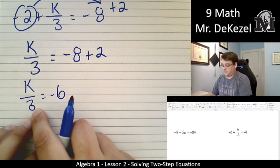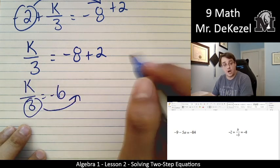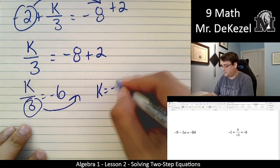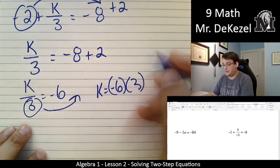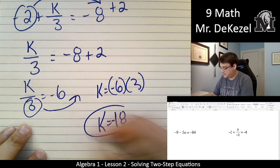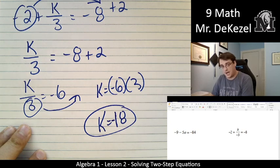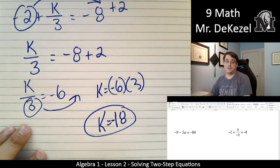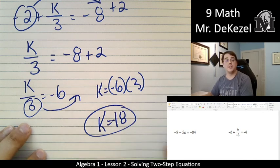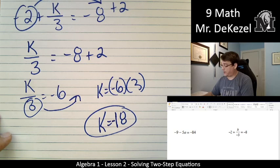So k divided by 3 is equal to minus 6. We have a 3 on the bottom, so if we're going to move it to the other side, it's going to go on to the top. k is equal to minus 6 times 3. k is equal to minus 18. One step at a time. We move the 2 over, the opposite sign. We move the 3 up to the other side. It was divided, so we multiplied, and we found our final answer.